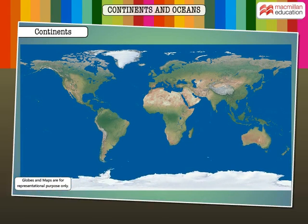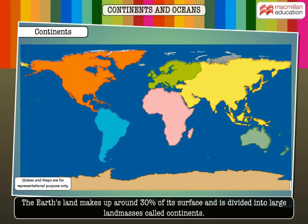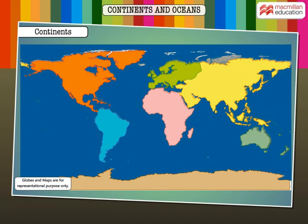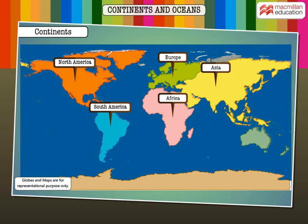The Earth's land makes up 30% of its surface and is divided into large land masses called continents. There are seven continents: Asia, Europe, Africa, North America, South America, Australia, and Antarctica.